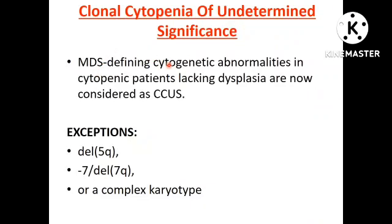MDS-defining cytogenetic abnormalities in cytopenic patients without dysplasia can be considered as clonal cytopenia of undetermined significance. The exceptions for MDS-defining cytogenetic abnormalities are deletion 5q, monosomy 7, deletion 7q, and complex karyotype. Other cytogenetic abnormalities in cytopenic patients — such as trisomy 8, loss of Y chromosome, deletion 12p, etc. — without dysplasia can be categorized as clonal cytopenia of undetermined significance.